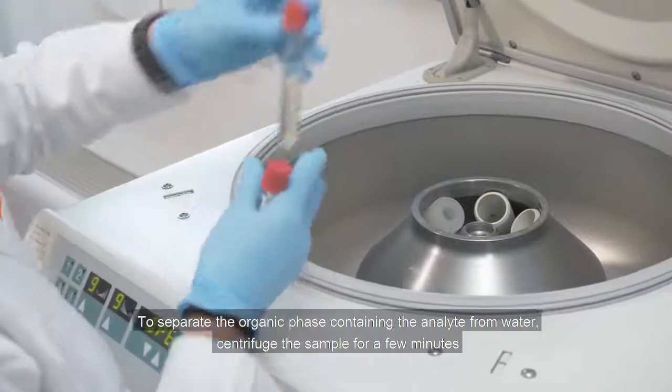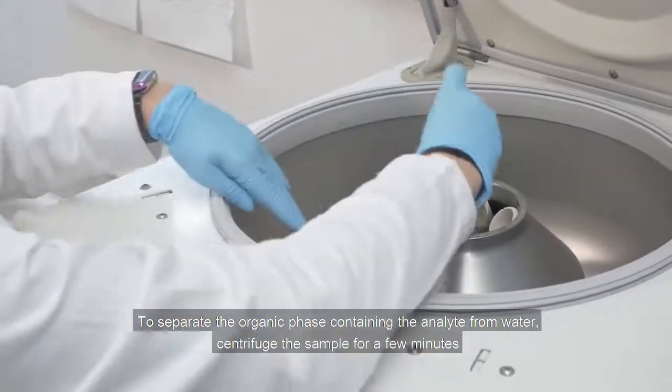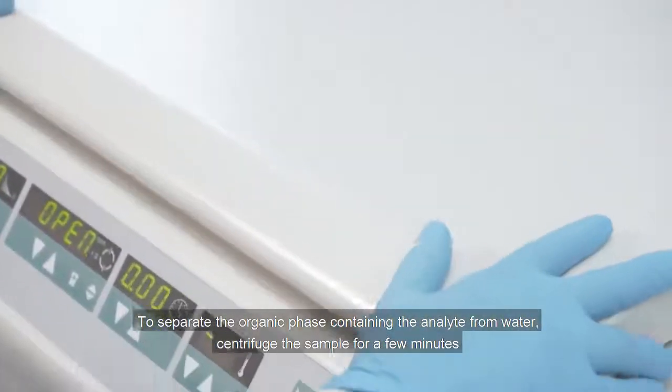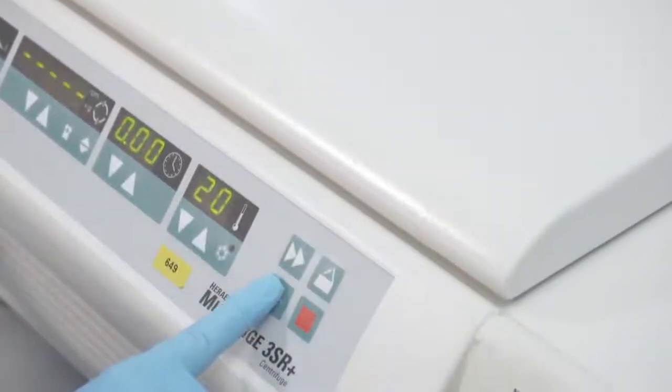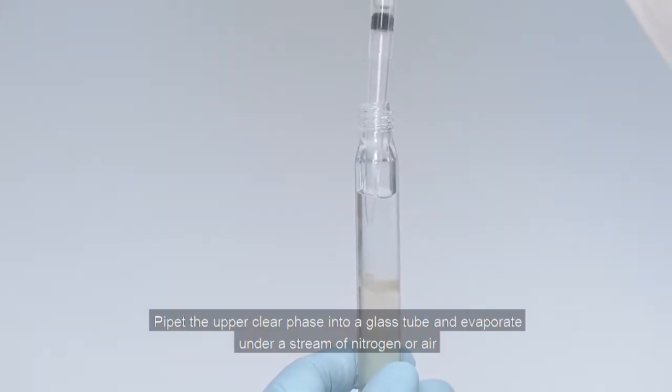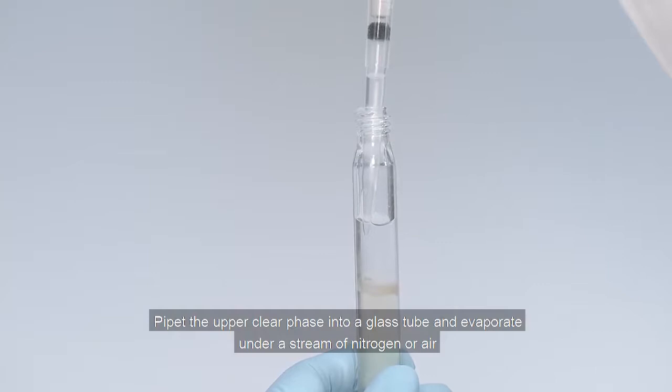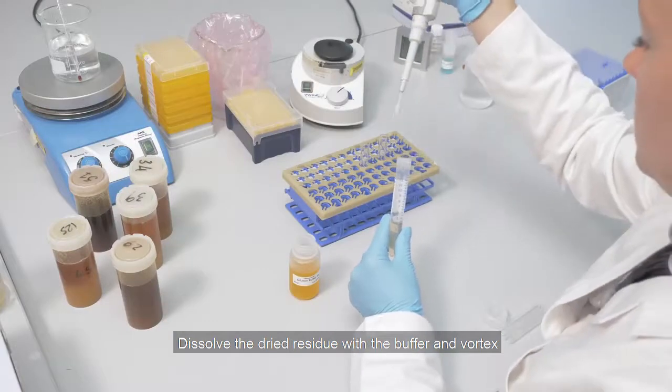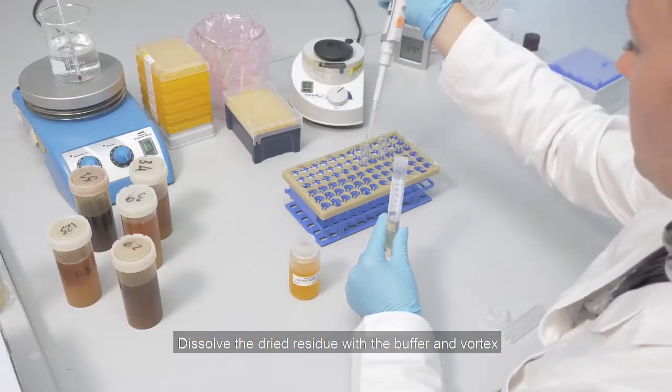To separate the organic phase containing the analyte from water, centrifuge the sample for a few minutes. Pipette the upper clear phase into a glass tube and evaporate under a stream of nitrogen or air. Dissolve the dried residue with buffer and vortex.